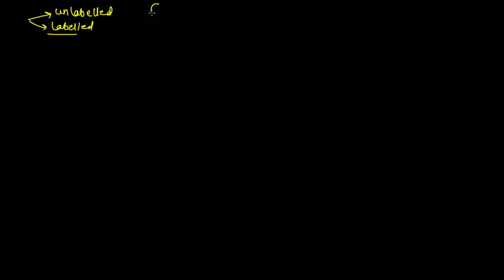For example, when I am representing a node, if I give a name to it — for example A, B, or C inside the node — then that node becomes a labeled node. Now let us see how many different binary trees are possible for a given number of nodes. We'll be making a table here: one column for nodes and one for number of binary trees possible.